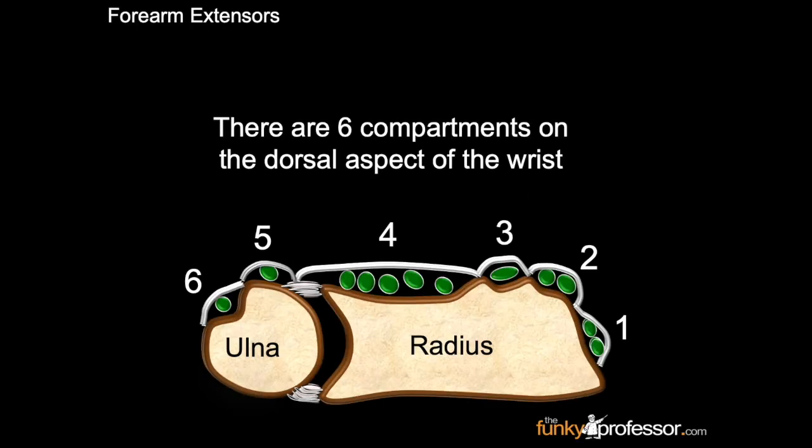Tendons at the wrist joint. There are six compartments on the dorsal aspect of the wrist. In this cross-section diagram, illustrated is the ulna on the left-hand side and the radius on the right-hand side. The six compartments are shown on the dorsal aspect of both bones, labelled 1 to 6.